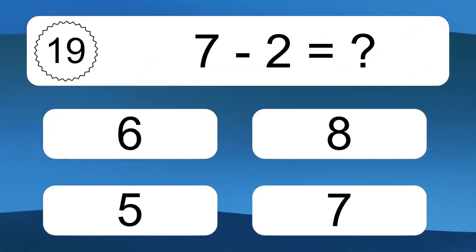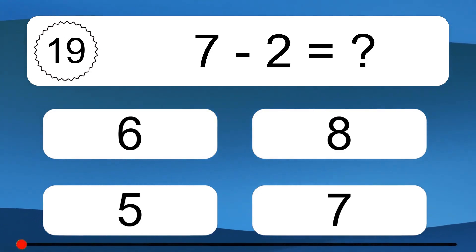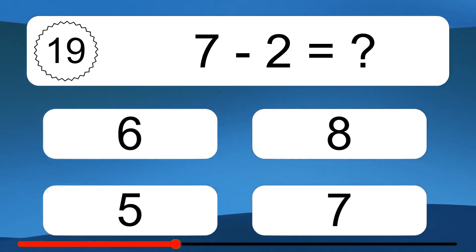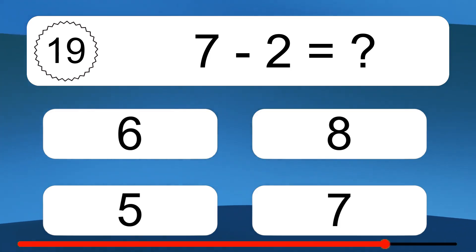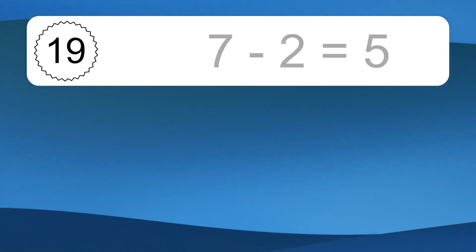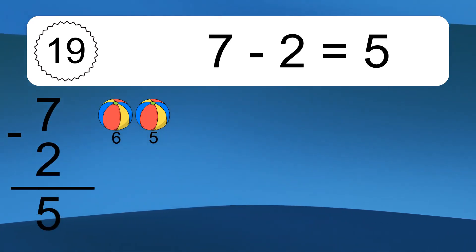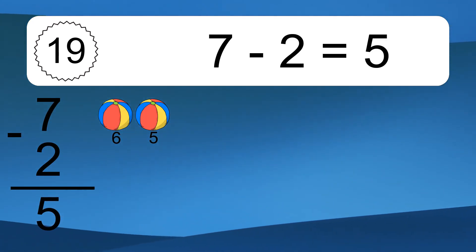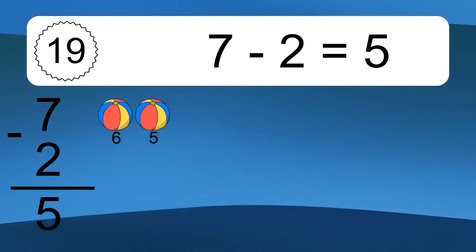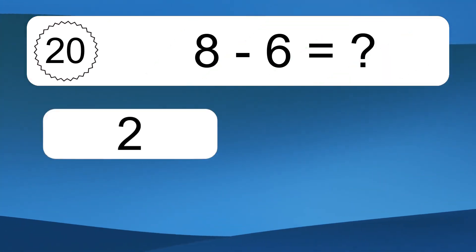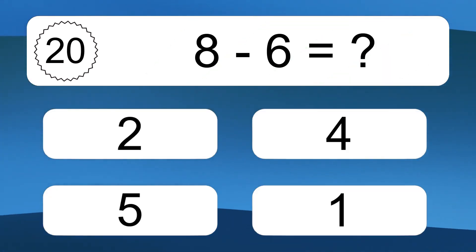7 minus 2 equals what? 7 minus 2 equals 5. Let's count it: 6, 5.